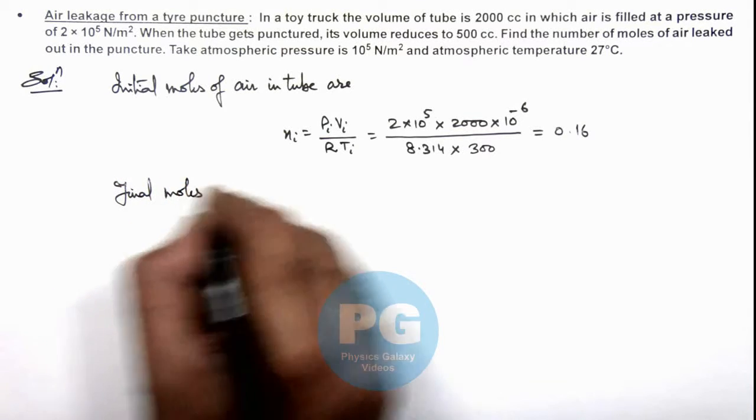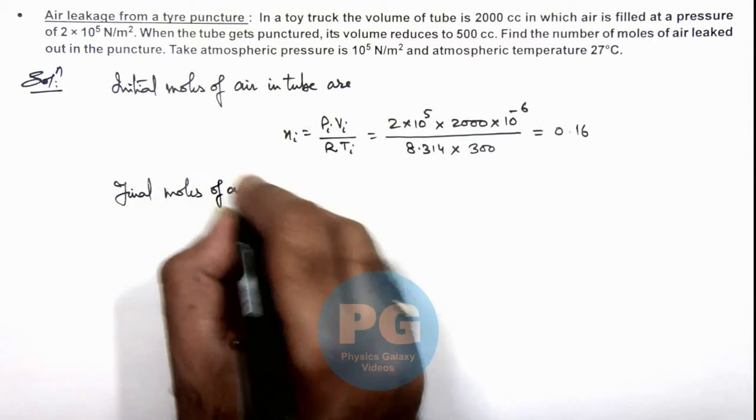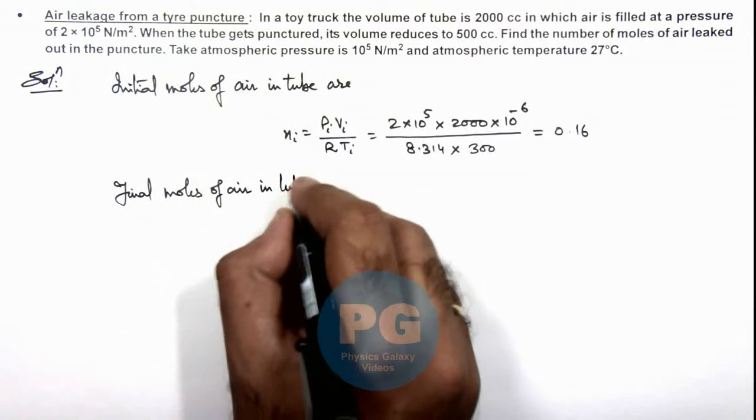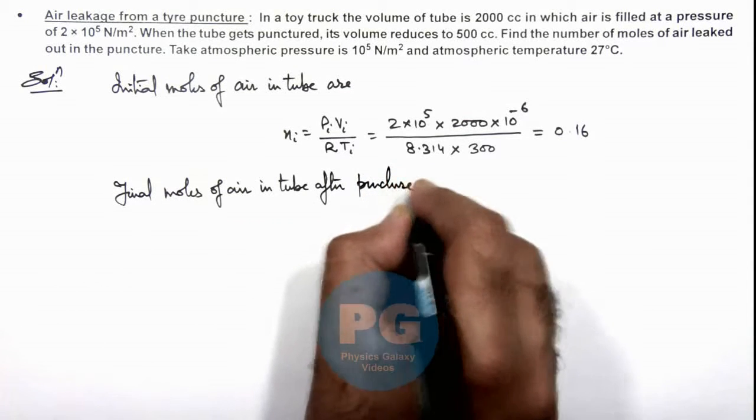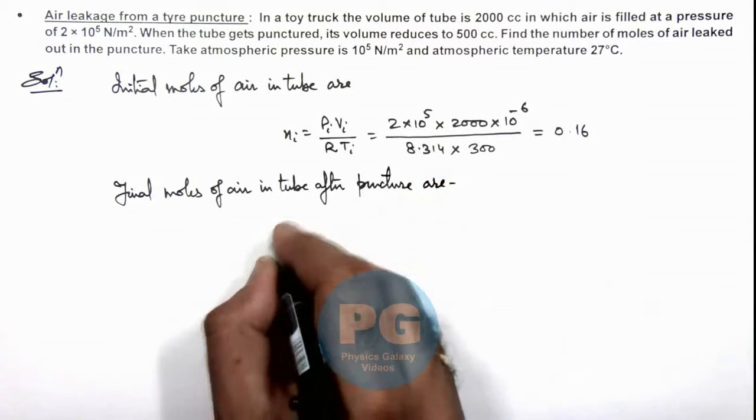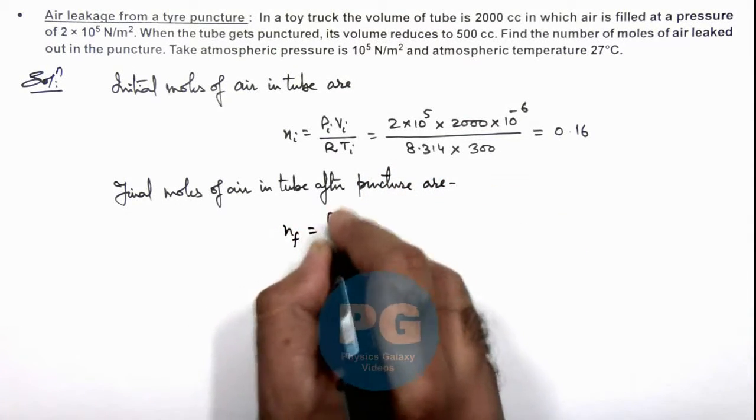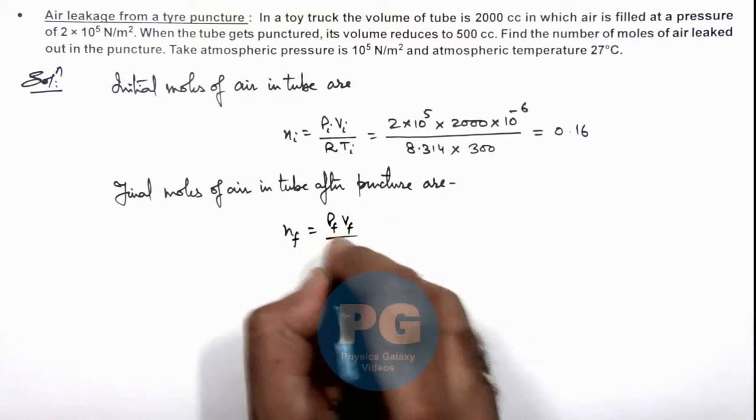Final moles of air in tube after puncture are: final moles we can write as P_final V_final divided by R T_final.